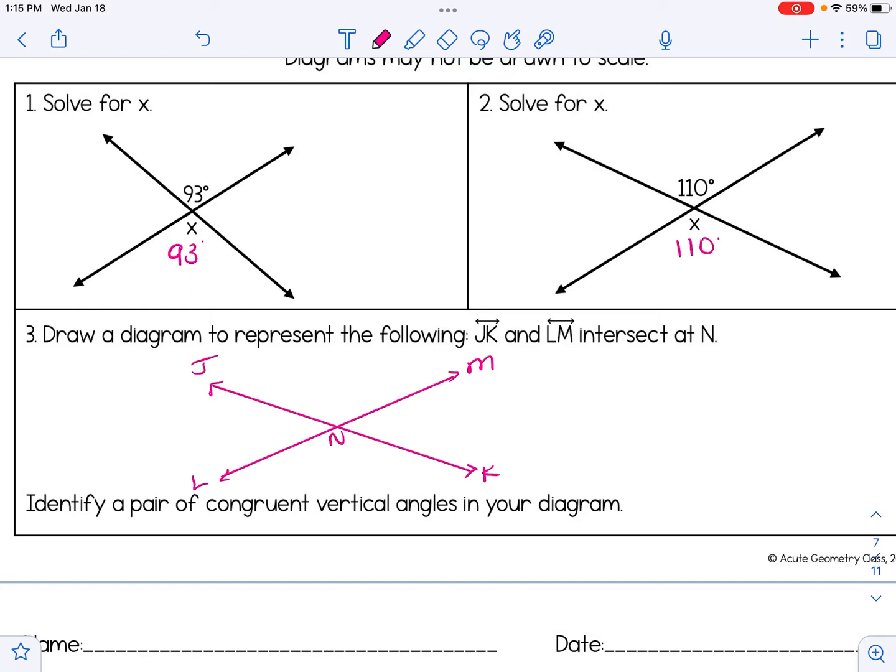It asks us to identify a pair of congruent vertical angles in our diagram. Well, as we talked about before, there are really two different pairs of vertical angles that are formed here. One option would be angle JNM is congruent to angle LNK. The other, angle JNL is congruent to angle MNK.